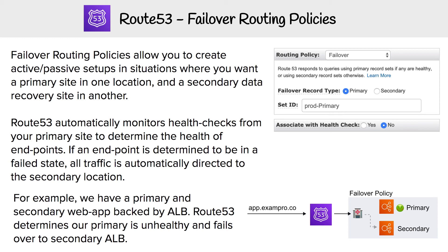Now we're looking at another routing policy — this one is for failovers. Failover allows you to create an active-passive setup in situations where you want a primary site in one location, and a secondary data recovery site in another one.